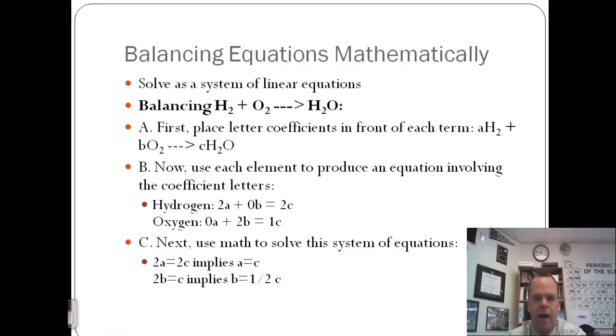Hydrogen here, there are two hydrogens in A, so 2A, plus zero hydrogens in B, the O2, so zero B, equals two hydrogens in H2O, so 2C. For oxygen, zero A plus 2B equals 1C.